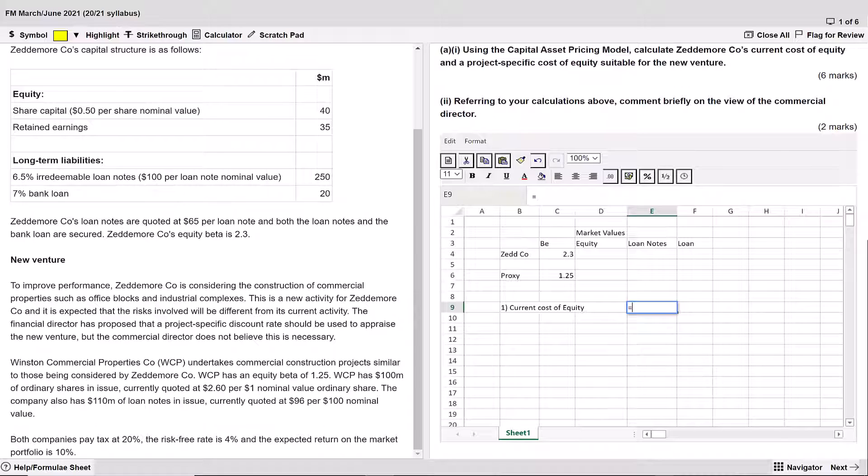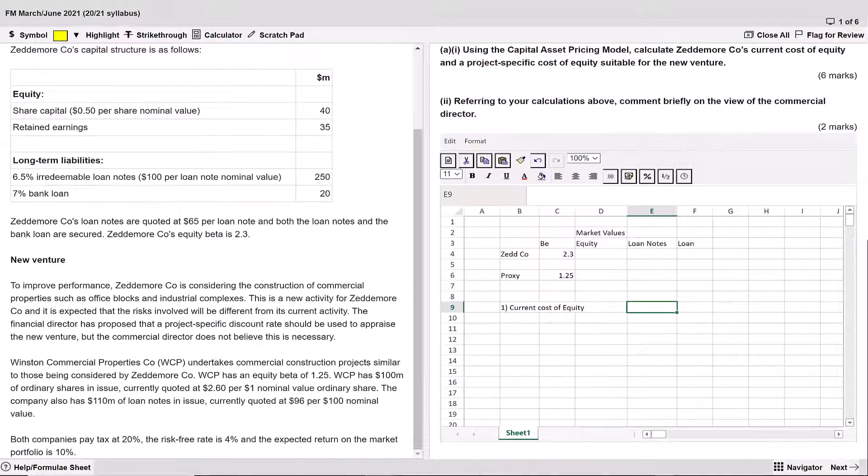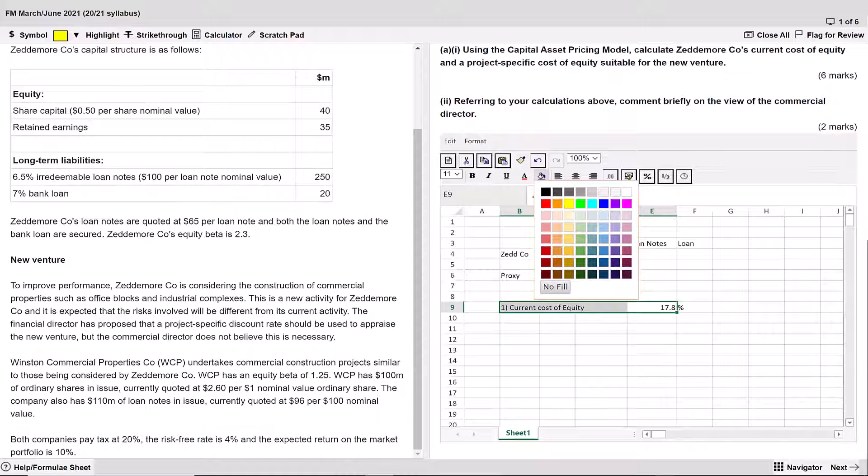First of all, the current cost of equity I'm going to calculate here using CAPM in the cells. CAPM is RF, the risk-free rate, plus the beta with RM, the market rate, minus the RF. Do not write that out because they know the formula. Do it all in the cell. Therefore it's going to be equals the risk-free rate of 4 plus the beta, pick Z company's beta, times by, open brackets, the 10 minus the 4. So notice I've done my workings, I've clearly labeled it, I've referenced the 2.3 and it's all done in the cell and it's 17.8%. Therefore highlight that you've done the first requirement, which is the current cost of equity.